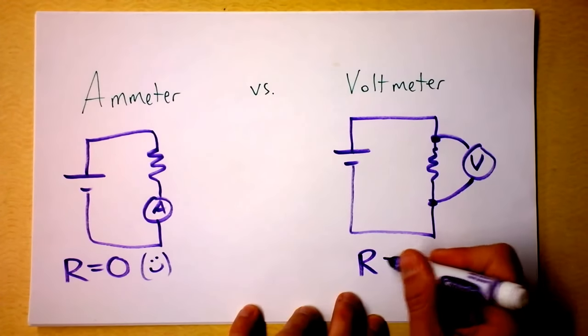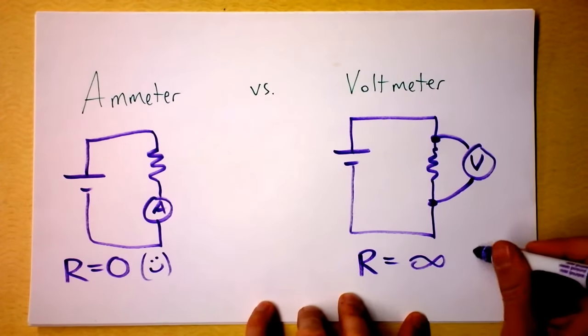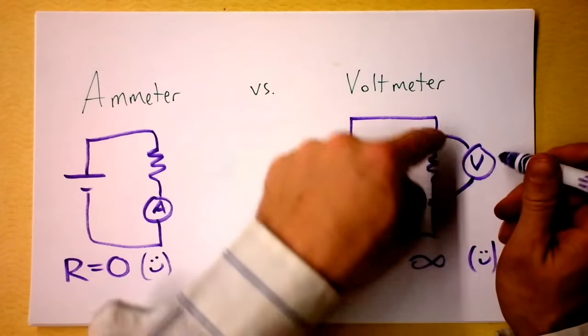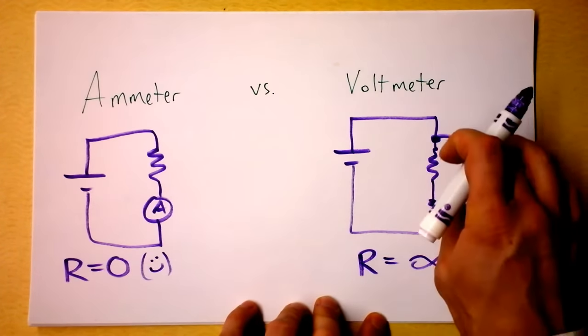You want the resistance of your voltmeter to be infinite. Of course, you're not quite going to get there, so some of the current will go through your voltmeter, which will do something strange to your voltage reading.